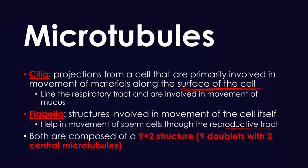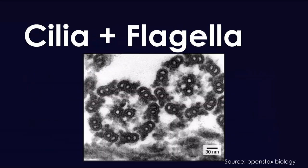Both cilia and flagella are actually composed of something called a 9+2 structure, meaning you have 9 doublets with 2 central microtubules. Looking at the electron microscopic image, you can see these 9 doublets with 2 central microtubules within the outer doublet ring. This is very important because this structure doesn't occur anywhere else — when you see it, you should immediately equate it to cilia and flagella, which are comprised of microtubules. You can see the hollow center of these microtubules.